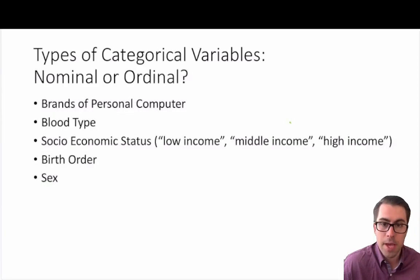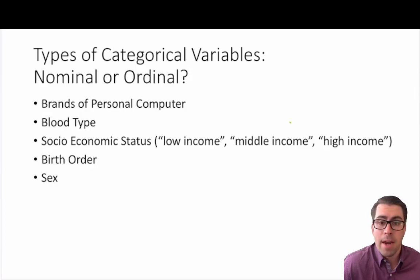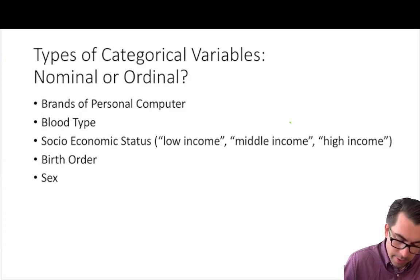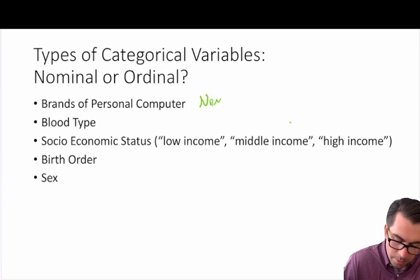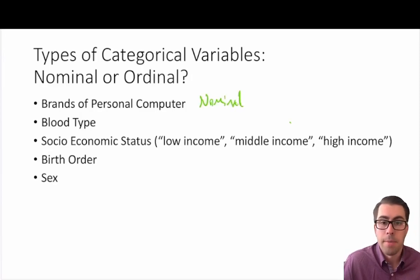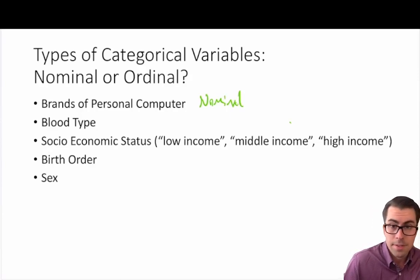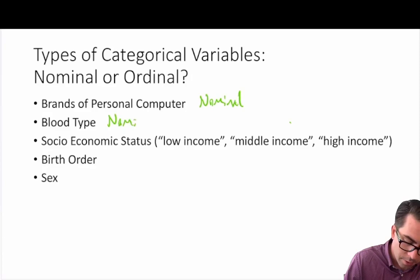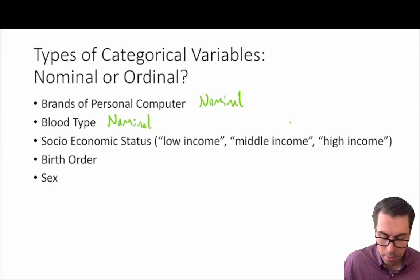Let's explore some categorical variables in more detail and label them as ordinal or nominal. Brands of personal computer — Mac or PC, Apple or Acer, and so on — this tells us nothing about the order, so we label this nominal. Blood type — type A, type B, type AB, type O, or positive/negative variants — again this tells us nothing about the order, so we call this a nominal categorical variable.